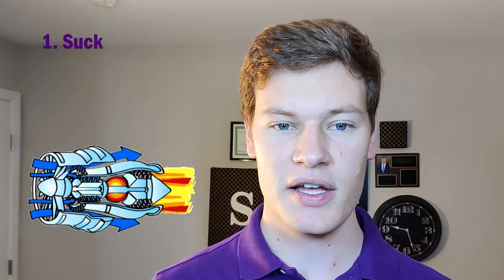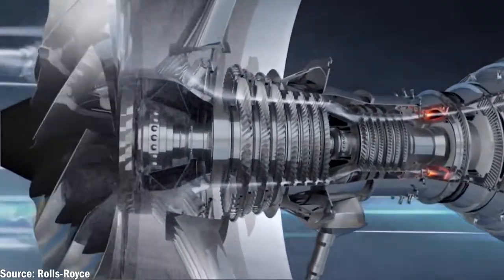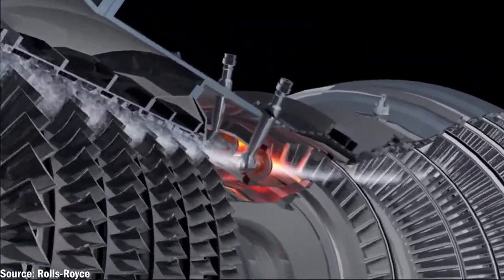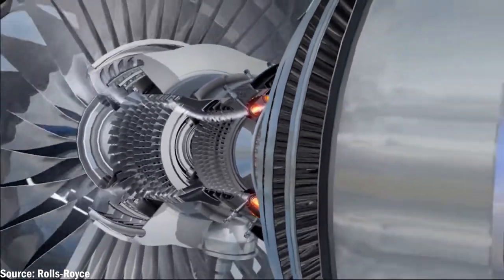This exiting of hot gas out the back of the engine is what produces thrust for the plane. There is a very simple way to remember all of the steps of a turbofan engine. To summarize, a turbofan engine works in four simple steps: Suck, Squeeze, Bang, Blow. The air is sucked in with the fan, squeezed with the compressor stage, combusted at the combustion chamber, and blown out the back after the turbine.